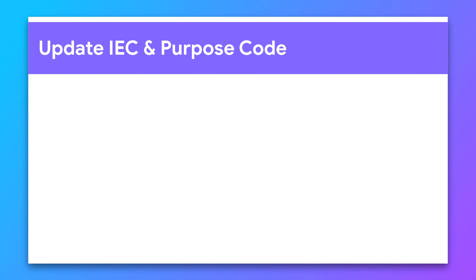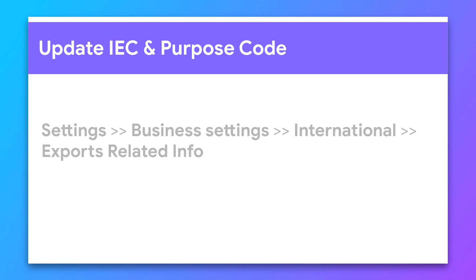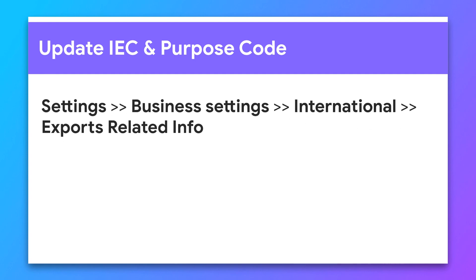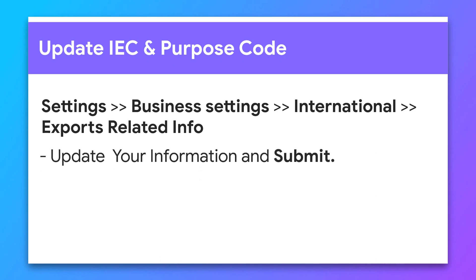In order to update your IEC and Transaction Purpose Code to your Dashboard, go to Settings. Under Business Settings, go to International Exports Related Info. Now update your information and submit. And we are done.